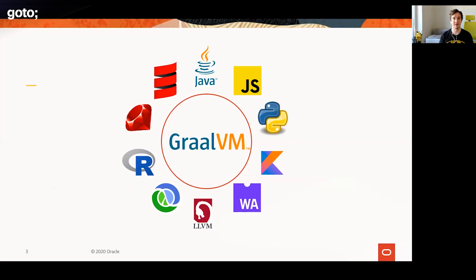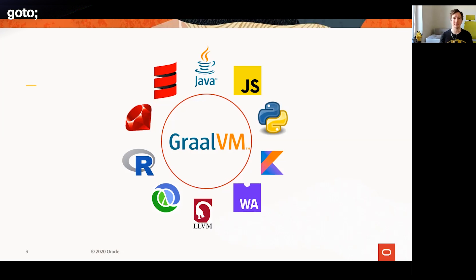GraalVM — I hope you've heard of it. It's a high-performance polyglot virtual machine that can support many languages. It naturally supports JVM languages such as Java, Scala, Kotlin, Groovy, and Clojure, and we also have support for JavaScript, Python, Ruby, R, WebAssembly, and LLVM bitcode for native languages. At the heart of GraalVM is the GraalVM JIT compiler, which can both optimize Java bytecode for JVM-based languages and plays a vital part for optimizing the other supported languages at runtime.